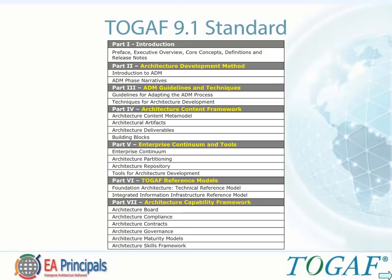Part 5, the Enterprise Continuum and Tools, includes the Enterprise Continuum, architecture partitioning, architecture repository, and tools for architecture development. Part 6, TOGAF Reference Models, includes foundation architecture, the technical reference model, and the Integrated Information Infrastructure Reference Model. Part 7, the Architecture Capability Framework, includes the architecture board, architecture compliance, architecture contracts, architecture governance, architecture maturity models, and architecture skills framework.